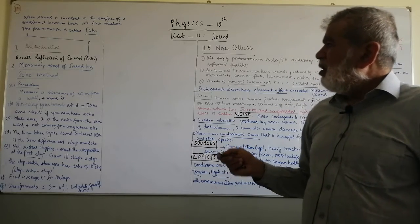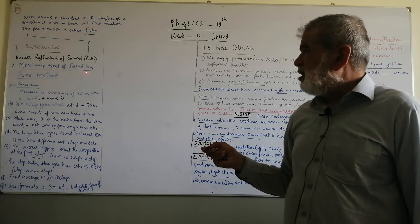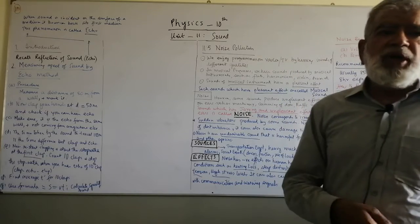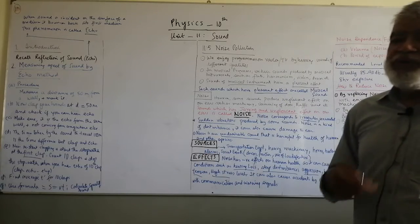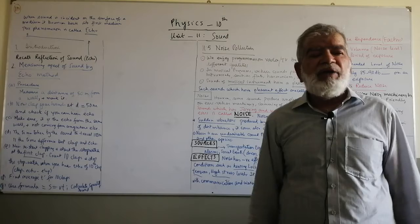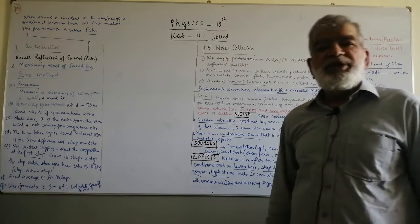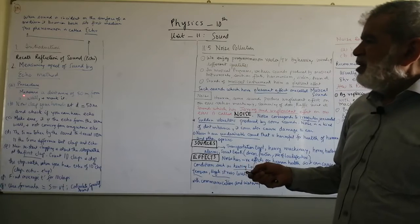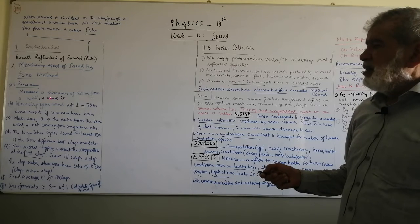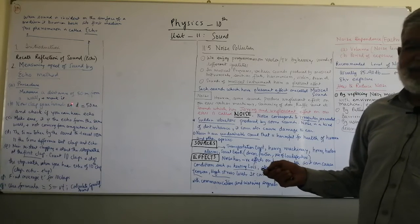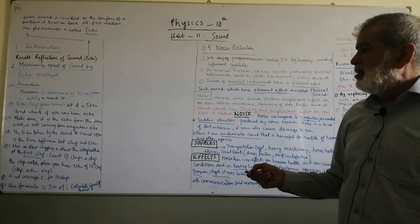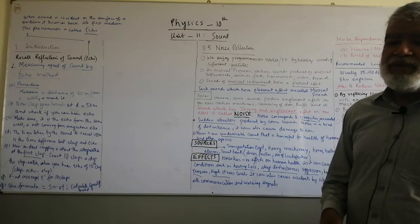Now we would like to measure the speed of sound by the echo method. You can do this yourself. The procedure is simple: measure a distance of 50 meters from a wall — take a wall such that the distance from the wall towards you is about 50 meters. Make a mark there, then clap your hands at that distance and check if you can hear the echo back.